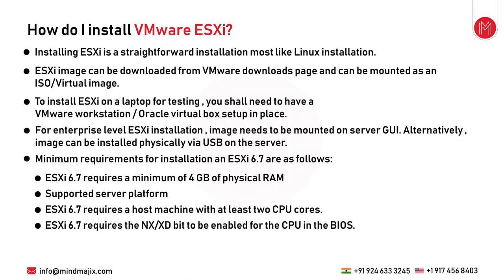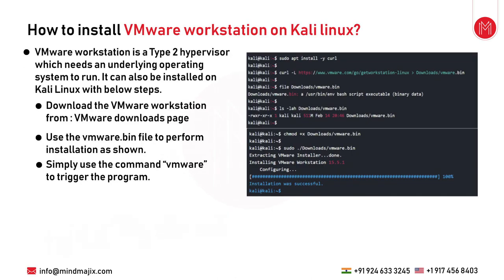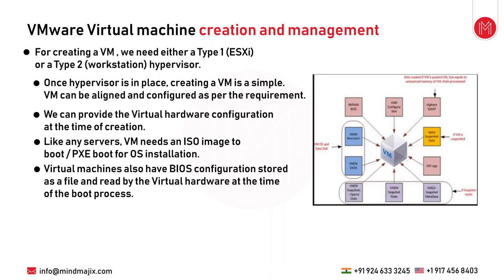For installing VMware Workstation on Kali Linux: VMware Workstation is Type 2, so Kali Linux must be installed as the base first. A specific binary file is available on the VMware downloads page. Download it to your Kali, change the permissions to executable, and run the installer. Once successful, you can create virtual machines by triggering the workstation with the command 'vmware'. It starts as an evaluation product and requires a license after the trial period.